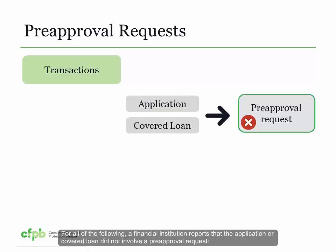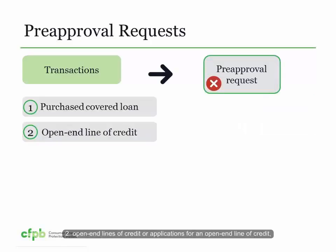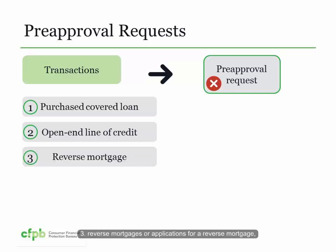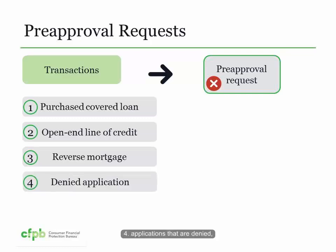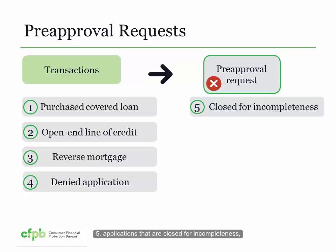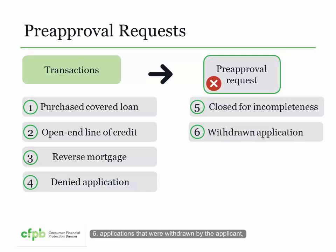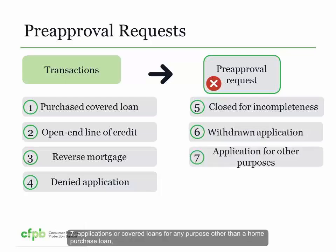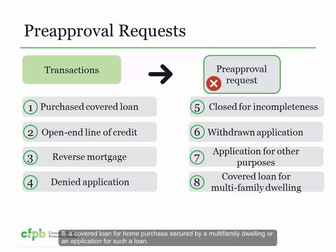Section 1003.2(b) provides that a pre-approval application is reviewed under a program in which the financial institution performs a comprehensive analysis of the applicant's creditworthiness and issues a written commitment valid for a period of time to extend a home purchase loan up to a certain amount. The written commitment may only be subject to conditions requiring identification of a suitable property, no material change in creditworthiness, and limited conditions traditionally attached to home mortgage applications. For all of the following, a financial institution reports that the application or covered loan did not involve a pre-approval request: purchased covered loans; open end lines of credit; reverse mortgages; applications that are denied; applications closed for incompleteness; applications withdrawn by the applicant; applications for any purpose other than a home purchase loan; and covered loans for home purchase secured by a multifamily dwelling.